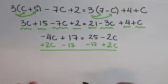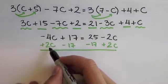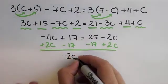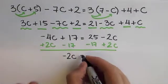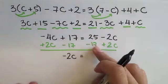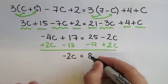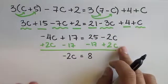When I perform the operations, negative 4c plus 2c gives us negative 2c. Positive 17 minus 17 cancels out. On the right hand side, 25 minus 17 gives me 8. While negative 2c plus 2c cancels out.